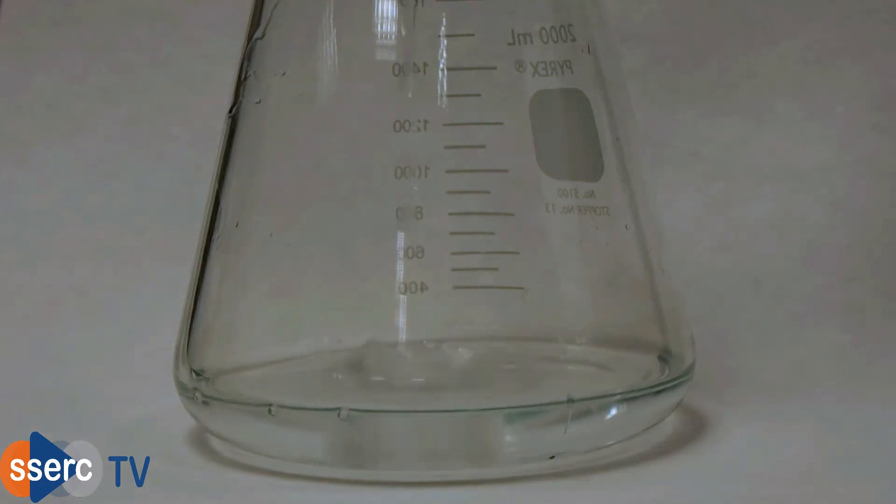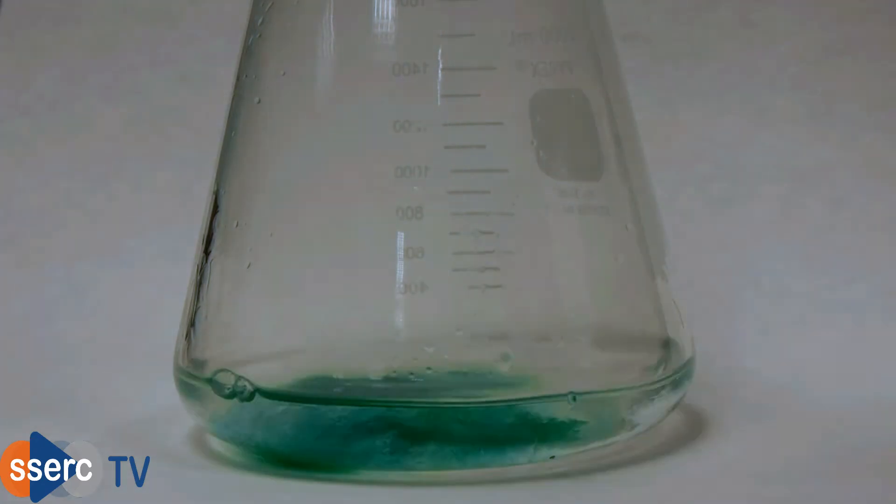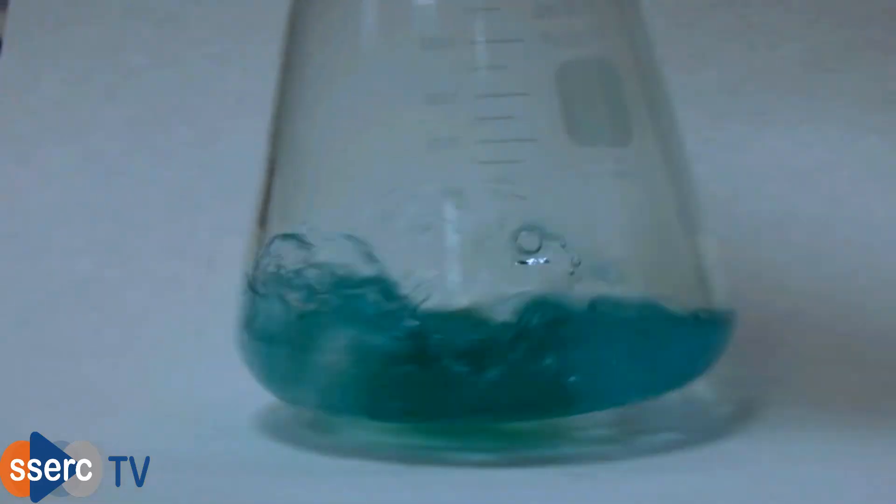We start off by taking a large flask and preparing a 1.2 molar solution of hydrochloric acid by diluting concentrated acid 10 to 1. To this we add some copper chloride and then swirl to dissolve.